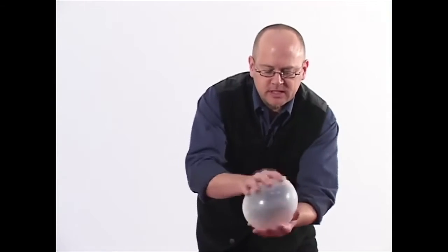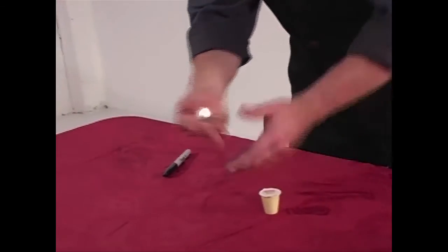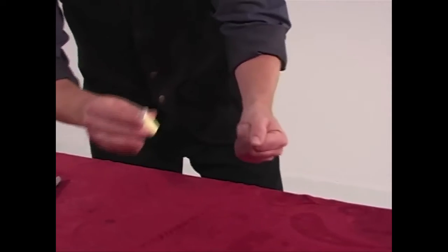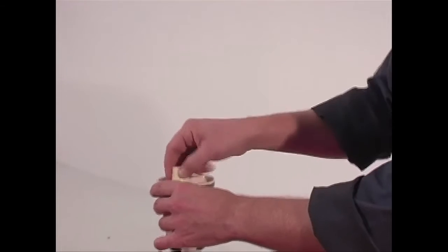I'm also a big fan of impossible location effects. With Amphibian, instead of the marked and borrowed coin appearing inside your card case, wallet, or envelope, the coin appears inside a second borrowed item—a creamer still filled with cream. It's completely unprepared and can even be examined before and after the shocking appearance.